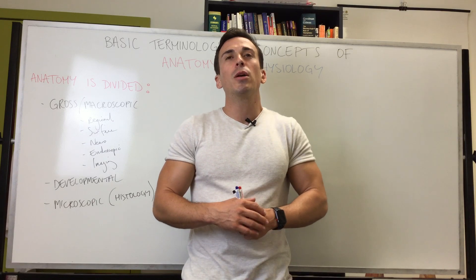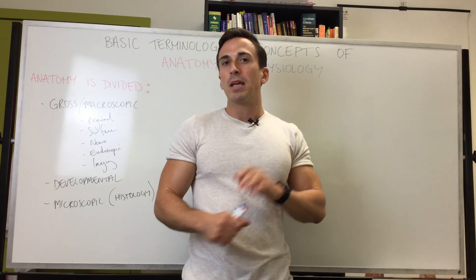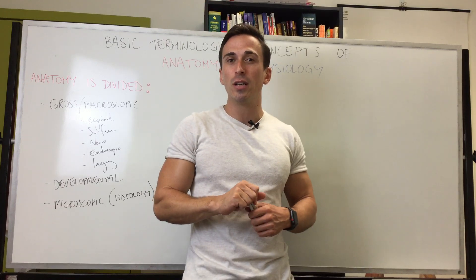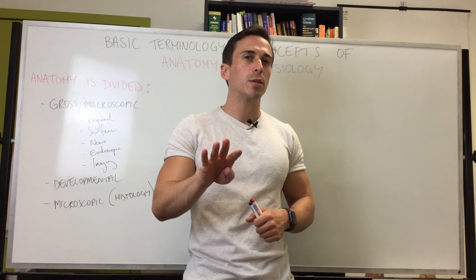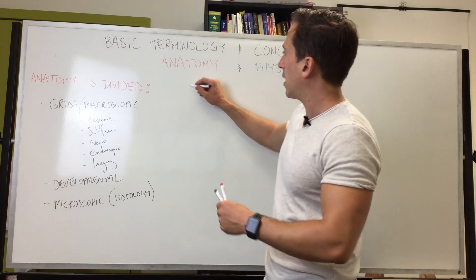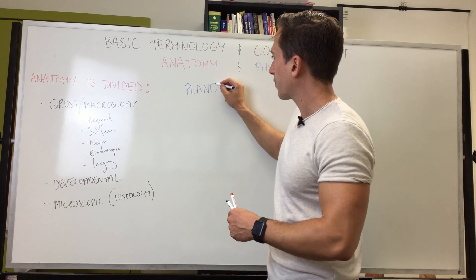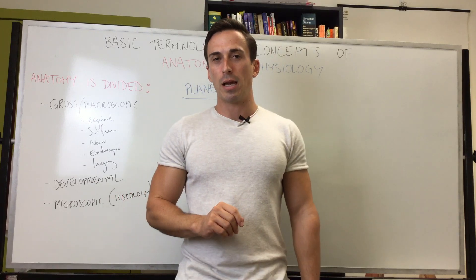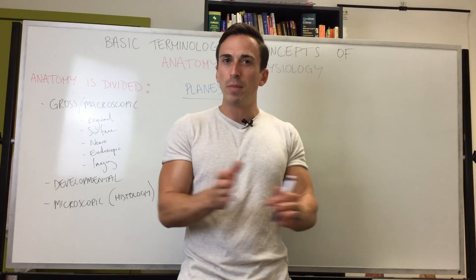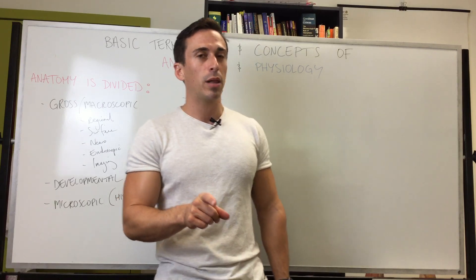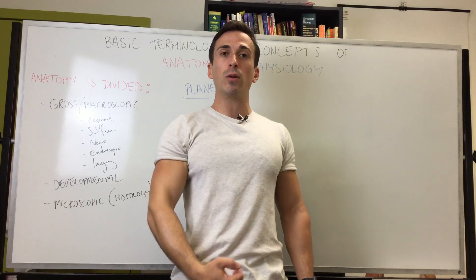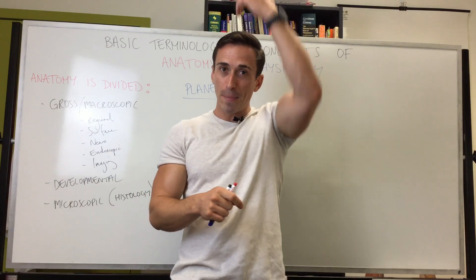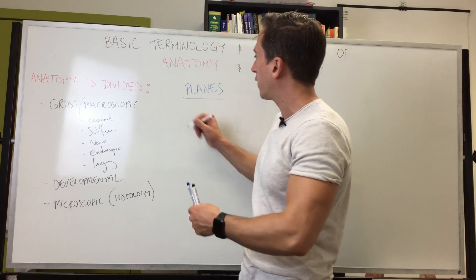In addition to that, you need to be aware of what we call planes. Planes describe the body after it has been cut or sectioned, and there are four major types you need to know. The first plane is called the median plane. Median sounds like middle, and that's exactly what it refers to — if you were to cut the body straight down the middle, separating it into equal left and right sides.